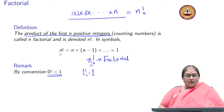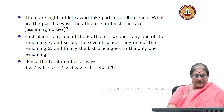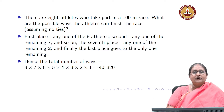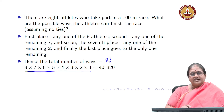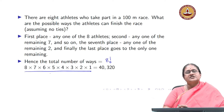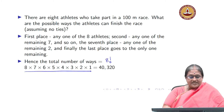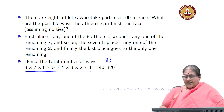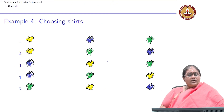Now, with this factorial notation, my earlier problem becomes very simple. I can write the total number of ways as equal to 8 factorial — which is far more elegant than writing it as 8 × 7 × 6 × 5 × 4 × 3 × 2 × 1. I can just express it as 8!. This factorial notation is extremely useful.